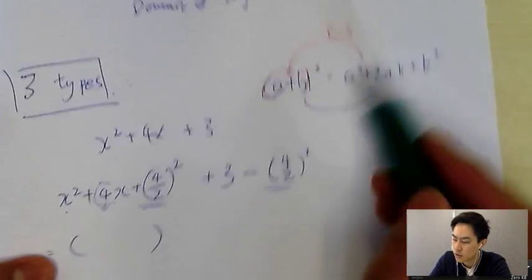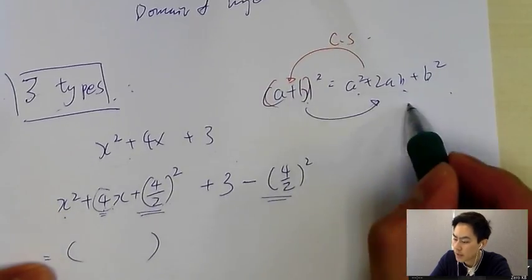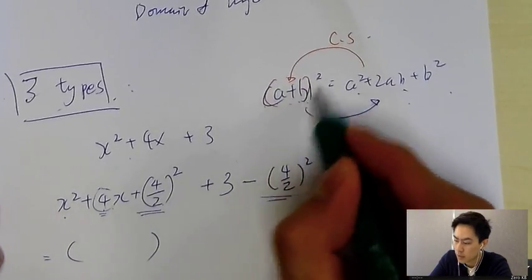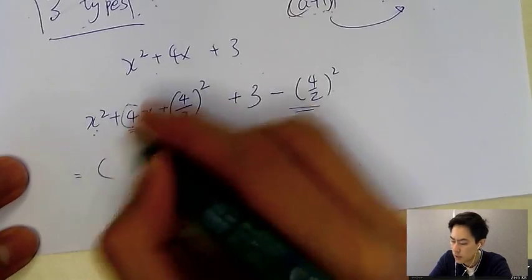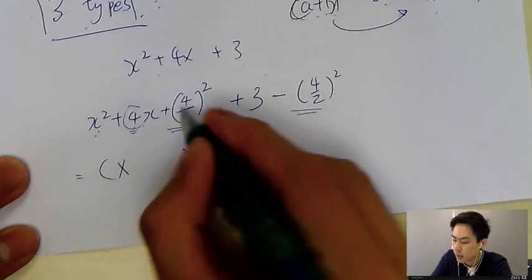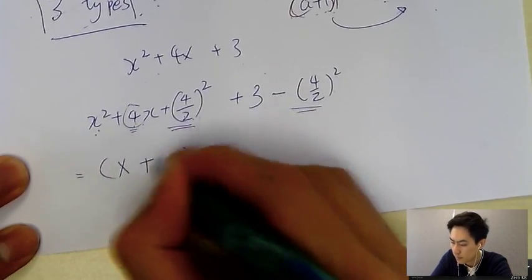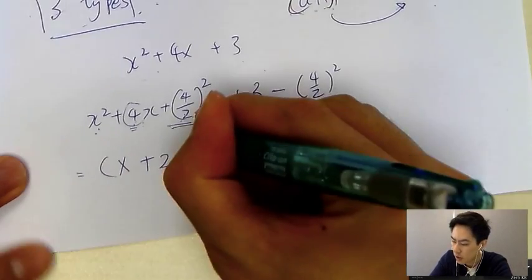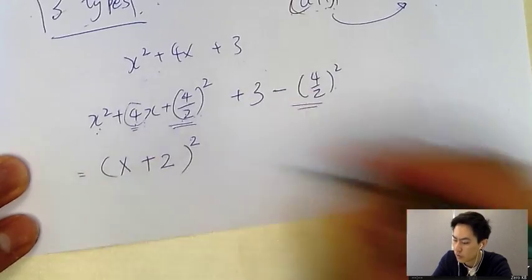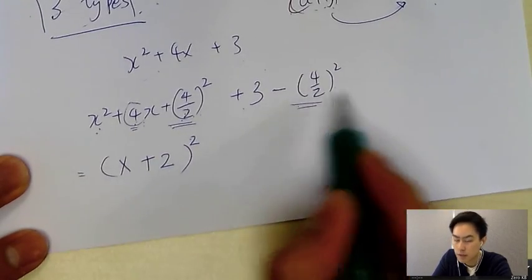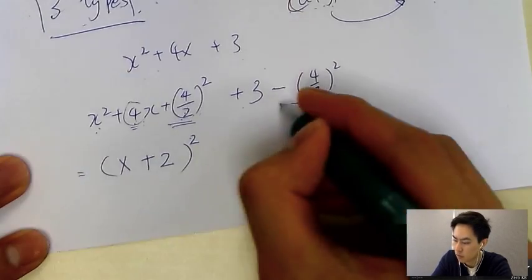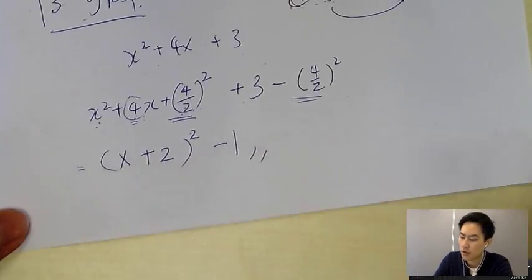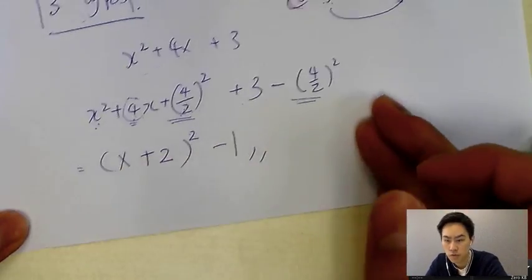So you can change those three things back to one bracket: (a + b)². Here a is x and b is 4/2 = 2, giving (x + 2)². Then 3 minus 4 equals −1, so the final answer is (x + 2)² − 1. That is how you do completing the square.